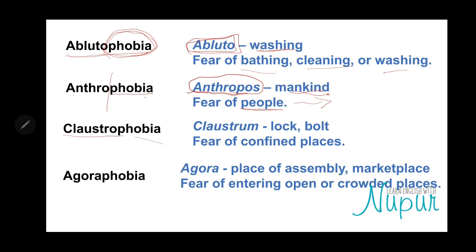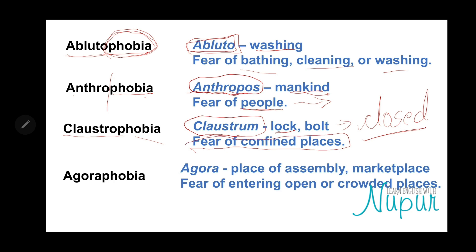Claustrophobia. The root word is 'claustrum,' which means lock — closed spaces. Fear of confined places. Many people have this. Claustrum means 'lock' — something that is locked, that is closed — so closed places. That is what claustrophobia is: the fear of confined places.